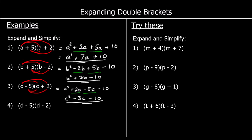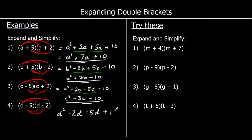The fourth one: d times d is d squared. d times negative two is negative 2d — positive times a negative is negative. Negative five times d is negative 5d. And negative five times negative two — negative times negative is positive — and five times two is ten, so plus ten. Collecting the like terms: we've got d squared, negative 2d take away 5d — negative two down five goes to negative seven — so d squared minus 7d plus ten.